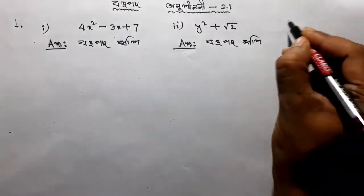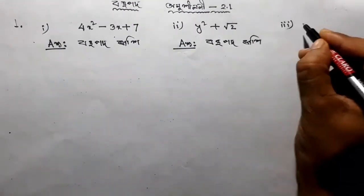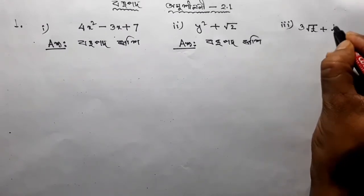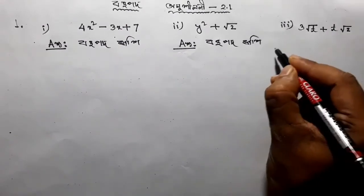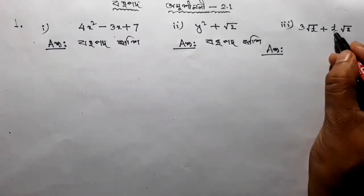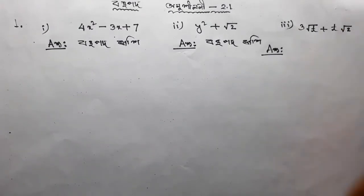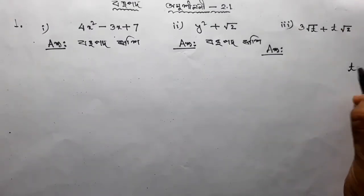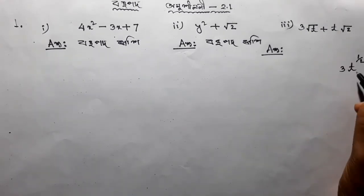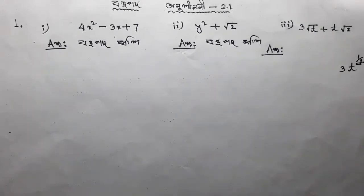Number 3 is root 2 plus root 2. So a to t is my root. You can see t to the power 1 by 2, root is 1 by 2. So a to t is my root.